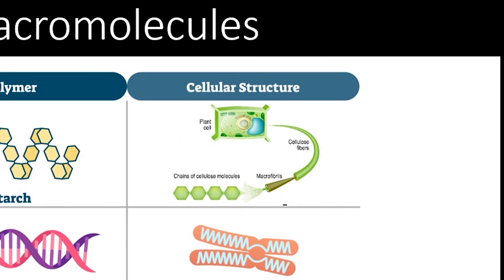For instance, plants use the carbohydrate polymer cellulose to create rigid cell walls.